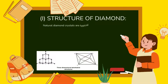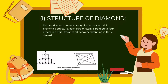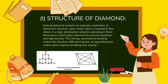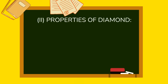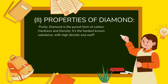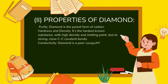Structure of diamond: natural diamond crystals are typically octahedral. In diamond's structure, each carbon atom is bonded to four others in a rigid tetrahedral network extending in three dimensions, giving diamond its extreme hardness and high density. This strong symmetrical bonding makes the structure difficult to break, as separating one carbon atom requires breaking four strong covalent bonds. Properties: diamond is the purest form of carbon and the hardest known substance, with high density and melting point due to strong C-C covalent bonds.